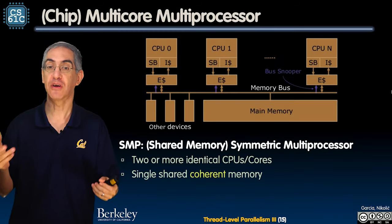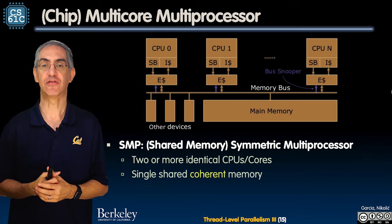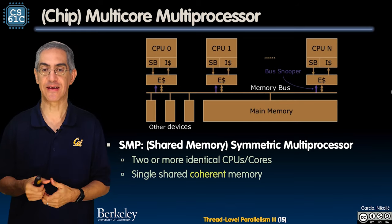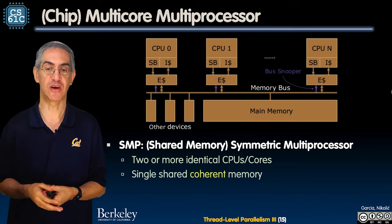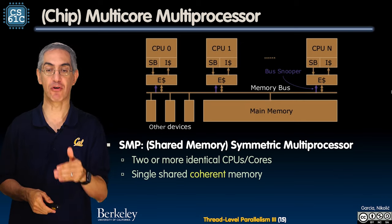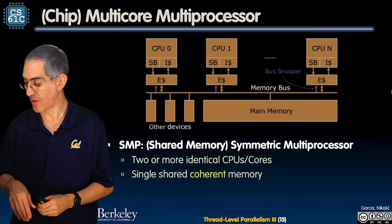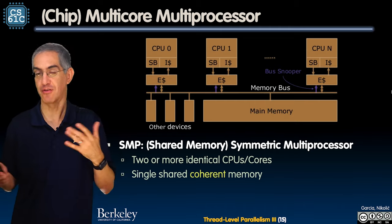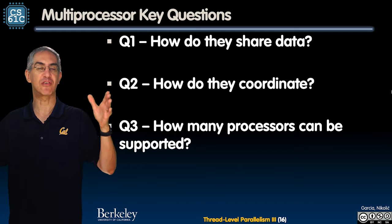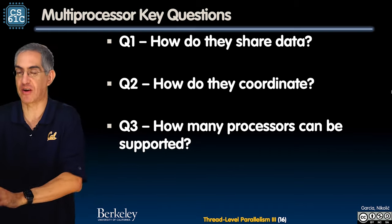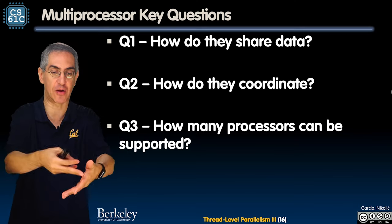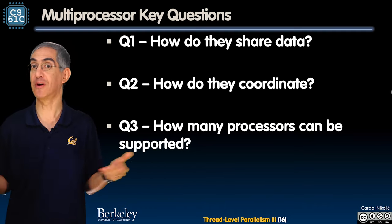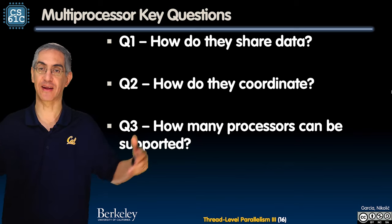On a chip, I've got my CPUs, my cores, each of them has a memory bus. I've got other devices and main memory. In a symmetric multiprocessor model - a multi-core machine with two or more identical cores - I've got a single shared coherent memory. Above the memory bus are my cores, below the line is the shared memory, and each one might have various levels of caches. The general questions are: how do they share data, how do they coordinate operations, and how many processors can be supported?